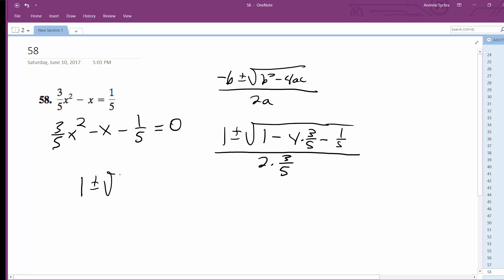So you get 1 plus or minus square root of 1 minus, or actually plus 12 over 25, all over 6/5.